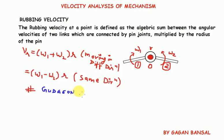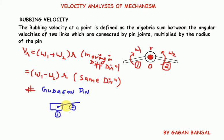Now one important case is that of the gudgeon pin. The gudgeon pin is the pin which joins the slider with the connecting rod. Link one is the slider having sliding motion, and link two is the connecting rod having turning motion. So the rubbing velocity at point O — that is at the gudgeon pin — will be equal to omega into r, where omega is the angular velocity of link two and r is the radius of this pin.